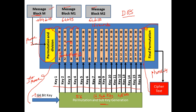So we'll understand this algorithm in four phases: first, how to generate sub keys; next, how to take a block of message and perform permutation and division; then the algorithm behind a round, applicable for all 16 rounds; and finally how to take the output and perform some final permutation to generate the ciphertext. We'll now start with Phase 1 — generating sub keys.